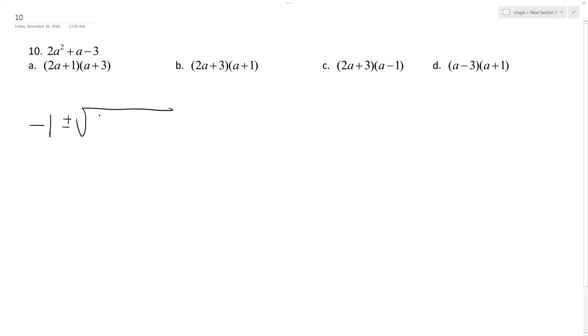Plus or minus the square root of B squared, so 1 minus 4 times A times C, so this ends up being 4 times 2, which is 8, times 3, which is 24. Okay, I had to think there.